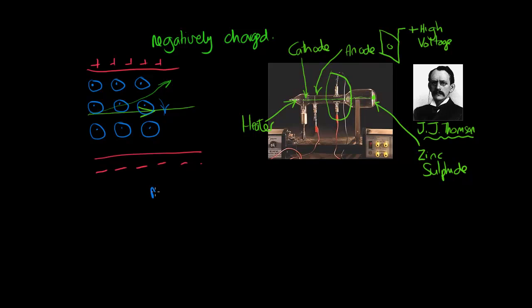And what he was able to do was, he was able to measure something called the charge mass ratio. Another word for this is the specific charge of an electron.